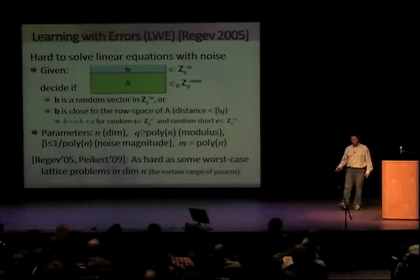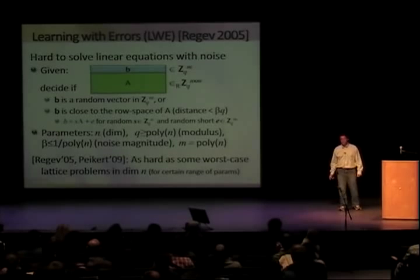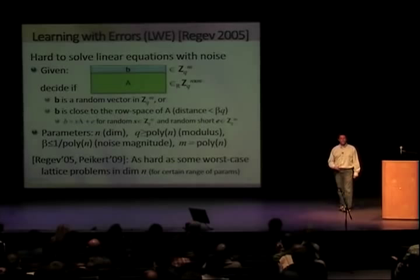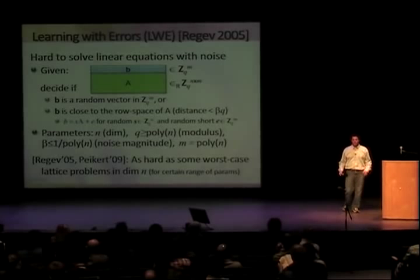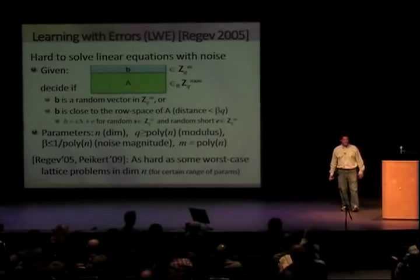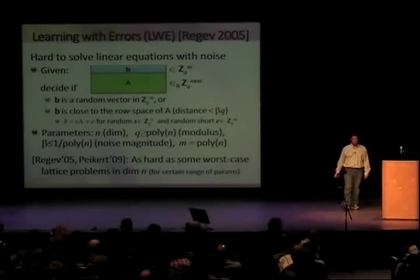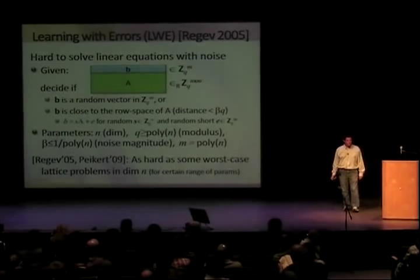LWE has already been used extensively in the last couple of years to do anything you can imagine: public encryption, circular secure, leakage resilient, and everything else. Now BV showed that you can also do homomorphic encryption with it.